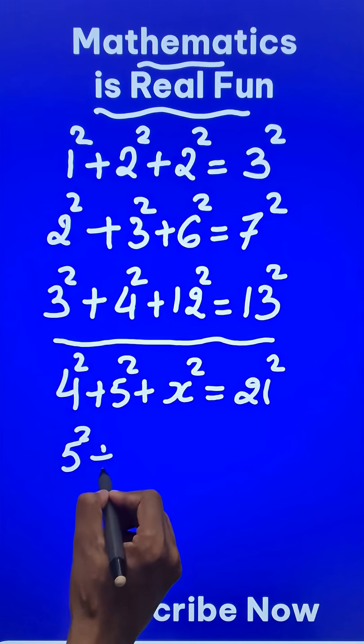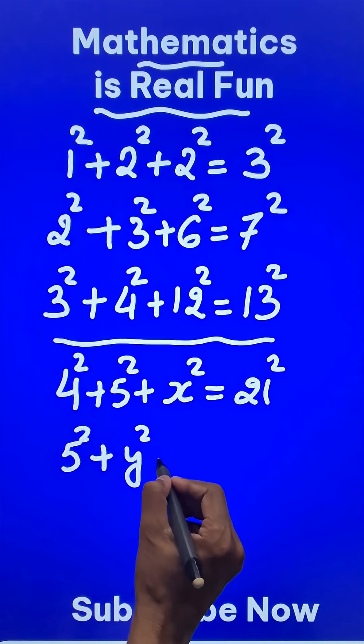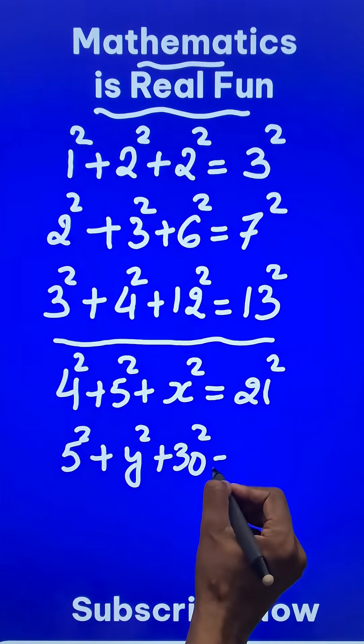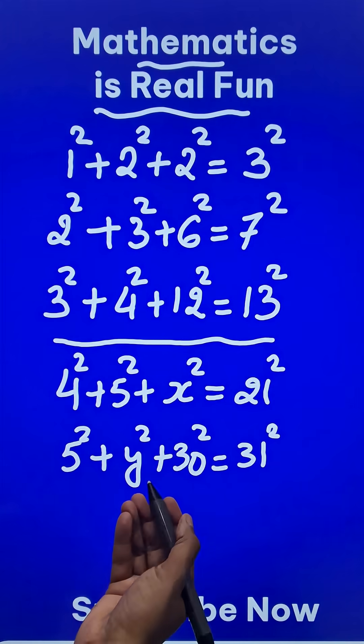Likewise, 5 square plus y square plus 30 square gives us 31 square. So what replaces y?